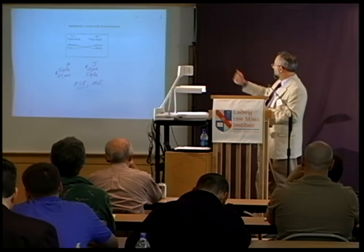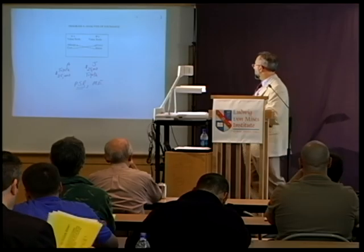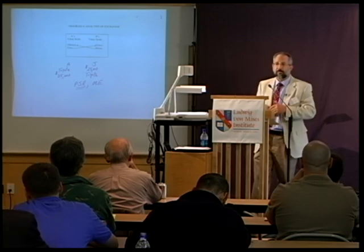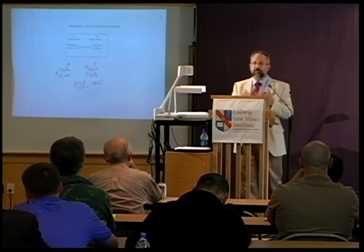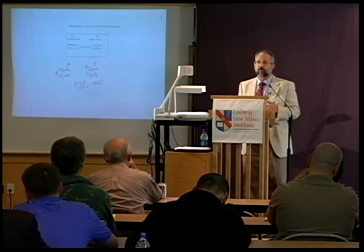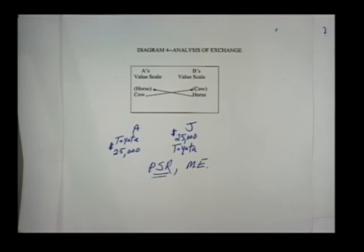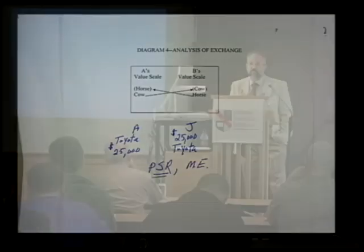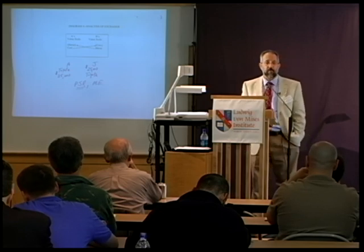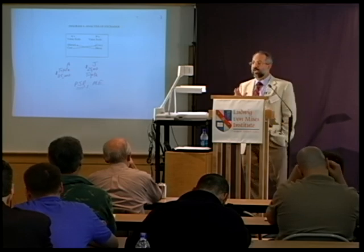That applies to international trade — no difference. Some imaginary boundary between countries does not nullify this law of economics. If an American values a Toyota more than $25,000 and the Japanese seller values the $25,000 more than the Toyota, the exchange will take place and benefit both parties. There is no national injury.